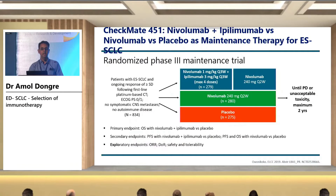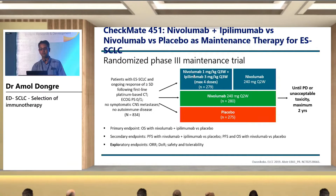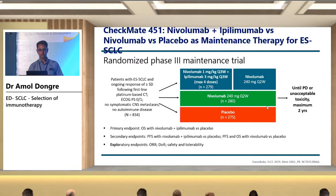Coming to first-line maintenance immunotherapy: CheckMate 451 is a randomized phase 3 maintenance trial of nivolumab plus ipilimumab versus nivolumab versus placebo for extensive stage SCLC. Patients with ongoing response or stable disease following first-line platinum-based chemotherapy, with no symptomatic CNS metastasis, were randomized: Arm 1 — nivolumab 1 mg/kg every 3 weeks with ipilimumab 3 mg/kg for maximum 4 doses followed by nivolumab maintenance; Arm 2 — nivolumab 240 mg every 2 weeks; Arm 3 — placebo, until progressive disease or unacceptable toxicity. The primary endpoint is OS with nivolumab plus ipilimumab versus placebo; secondary endpoints are PFS and OS with nivolumab versus placebo, plus overall response rate, duration of response, safety, and tolerability.